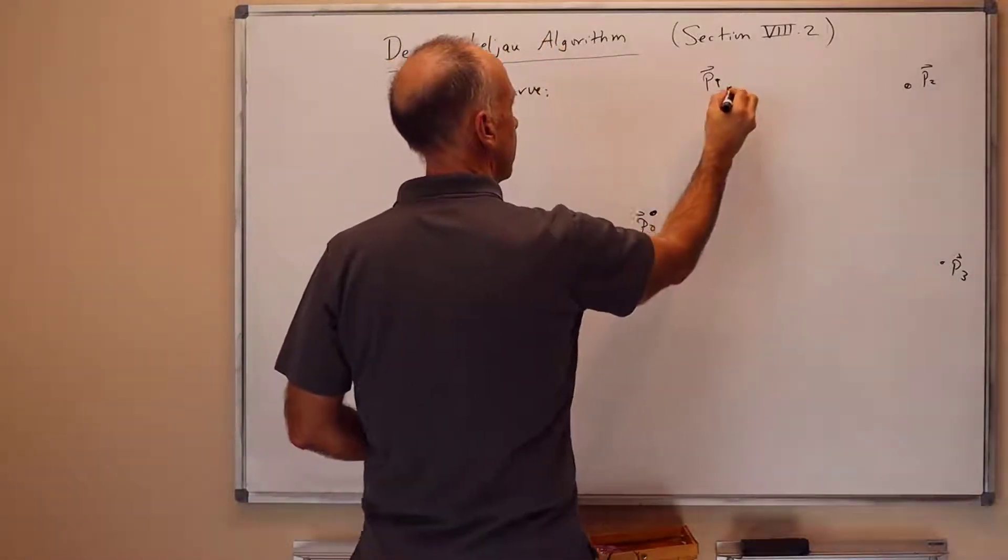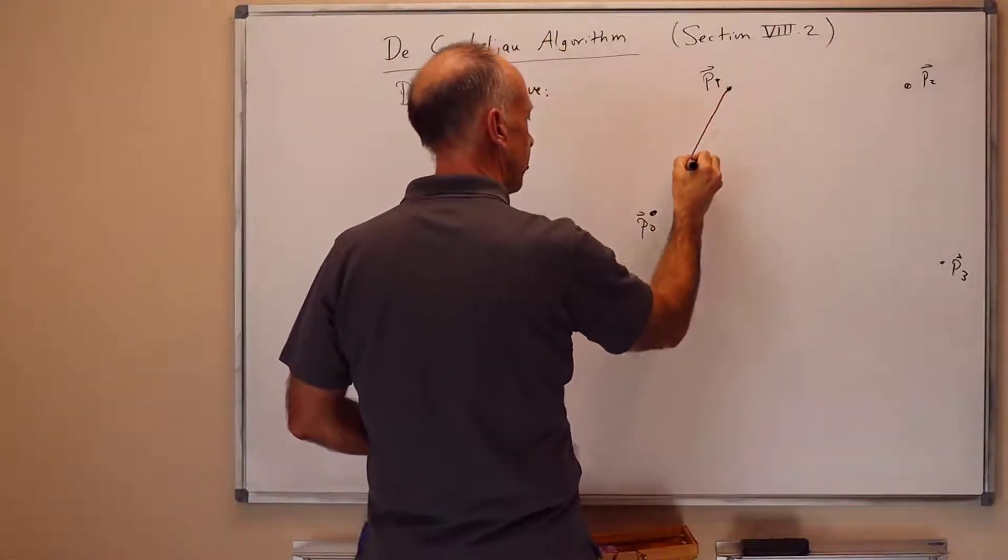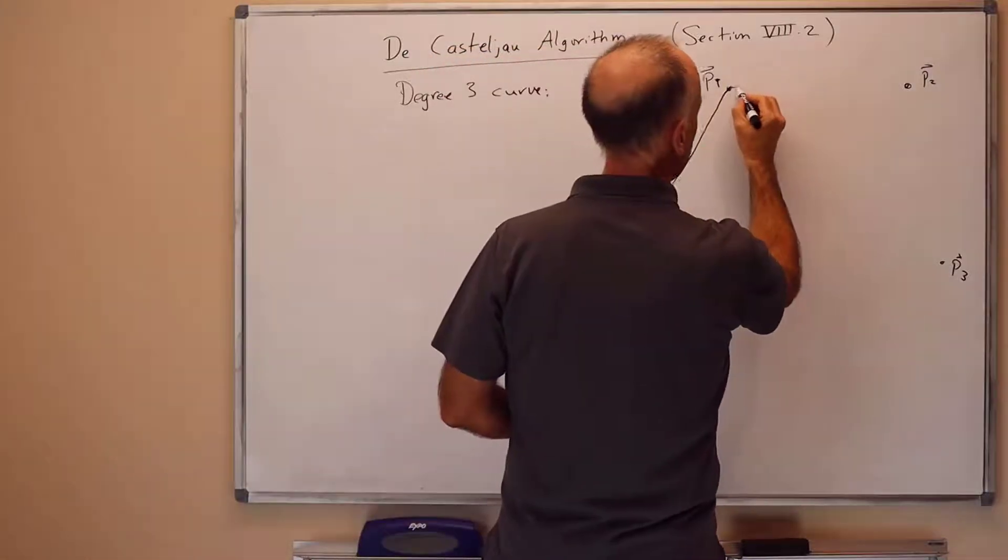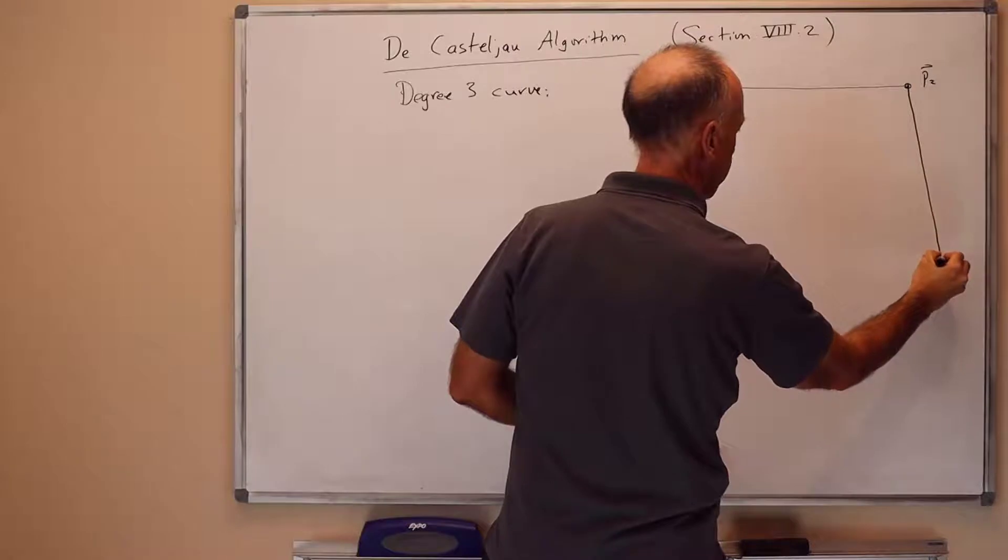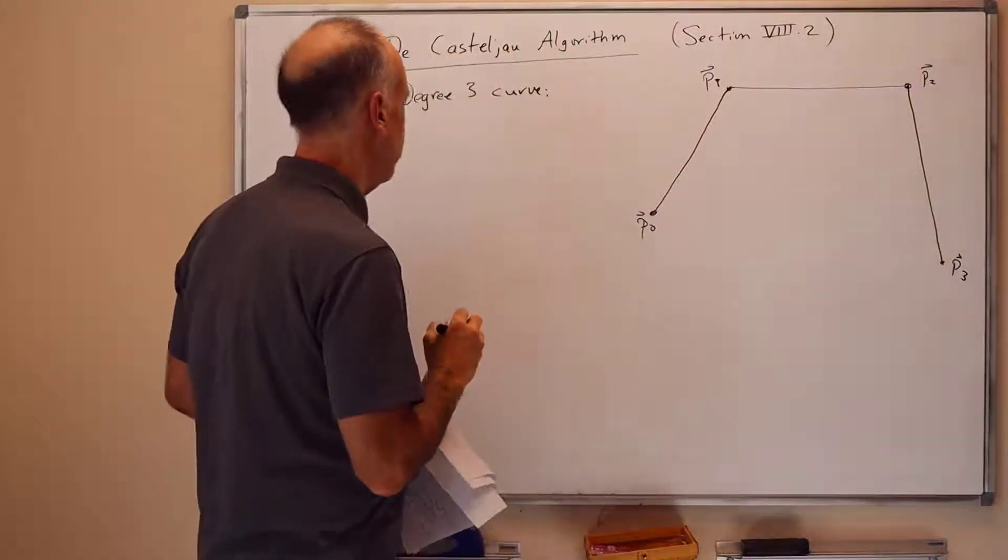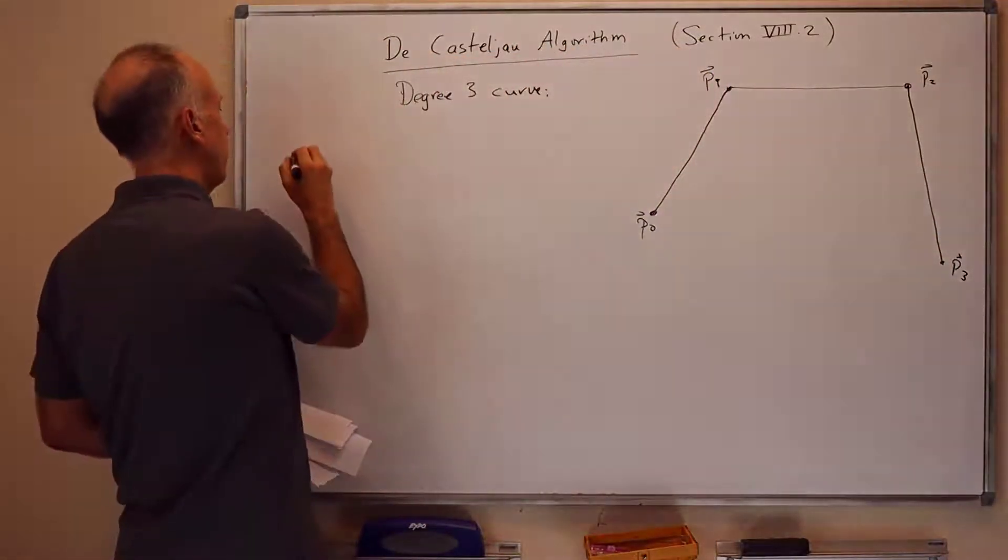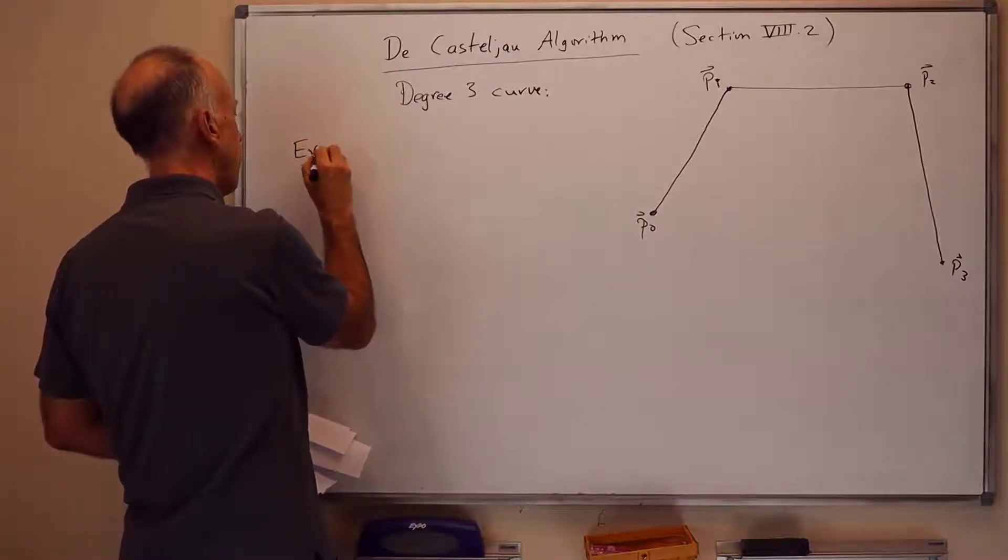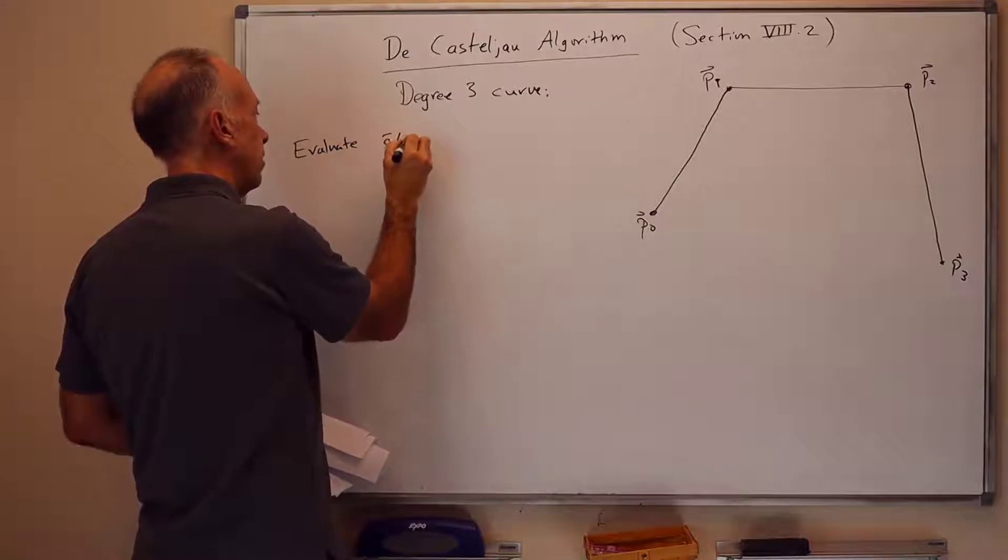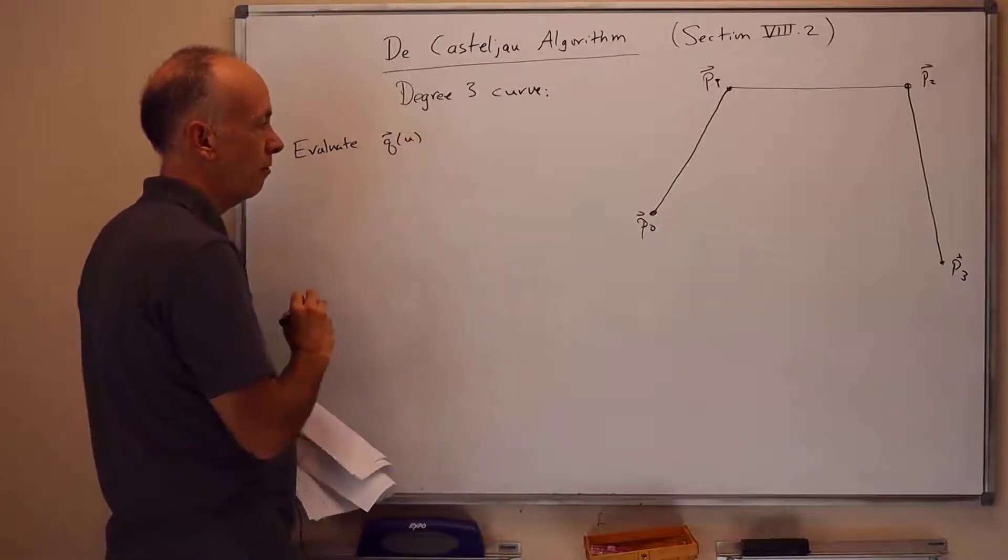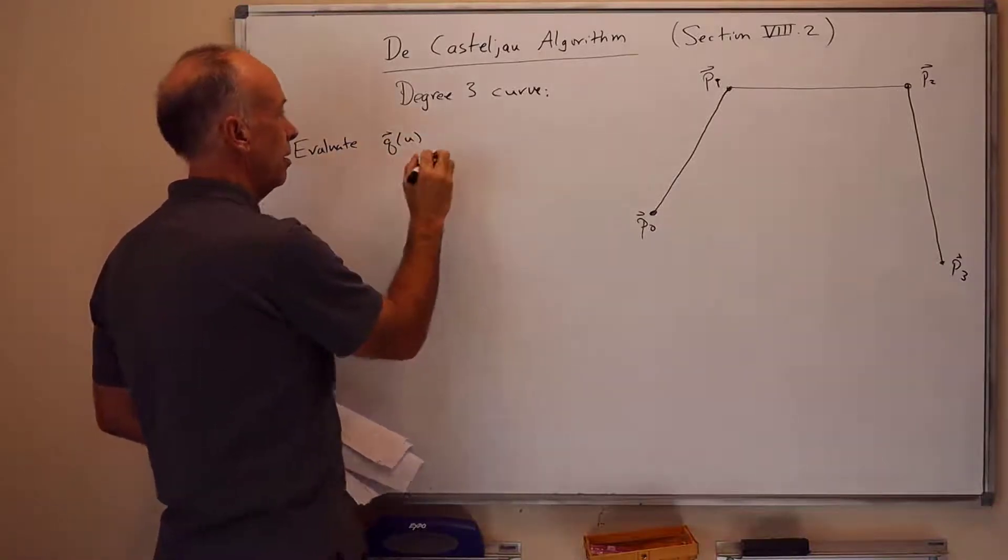The control polygon is the straight lines joining these points in order. So the straight line segments from P0 to P1, P1 to P2, and P2 to P3. And we want to evaluate the degree 3 Bezier curve defined by these four points, Q of U, as follows.